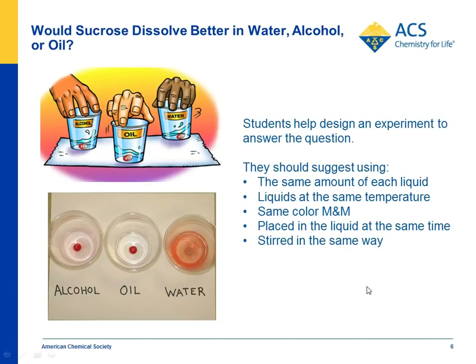Students then ask: would other liquids work the same way? They compare water, isopropyl alcohol, and mineral oil — mineral oil is used because it's clear and colorless. Students realize they should use the same volume of liquid, put in the same color M&M in case color matters, put them in at the same time and in the same way, and swirl them for the same length of time and in the same way.